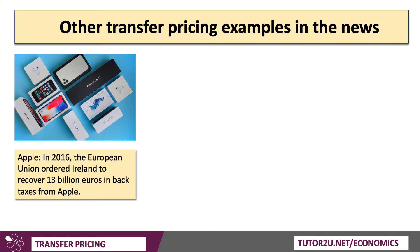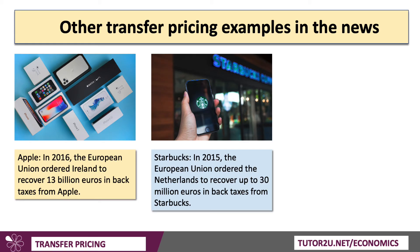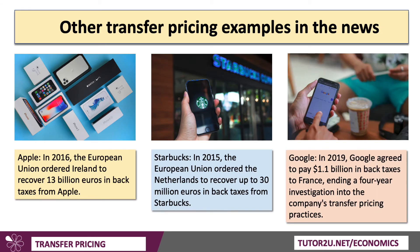Apple, in 2016: the European Union ordered Ireland to recover billions of euros in back taxes, finding that Apple had used a complex web of subsidiaries to shift profits from one jurisdiction to another, thereby avoiding taxes on some of its European earnings. Ireland, of course, is a low-tax country. Starbucks: the European Union found that the company received illegal tax benefits — Starbucks had paid artificially low prices for coffee beans from a subsidiary in Switzerland, allowing it to shift profits from the Netherlands to Switzerland and reduce their tax liability. And Google, in 2019, agreed to pay over a billion dollars in back taxes to France following a four-year investigation into transfer pricing.